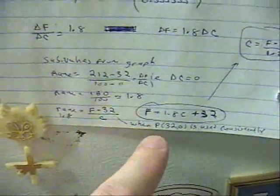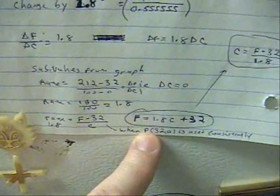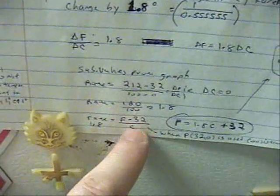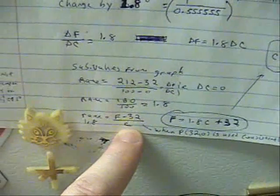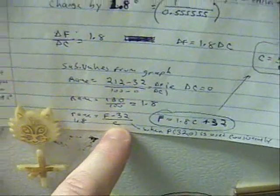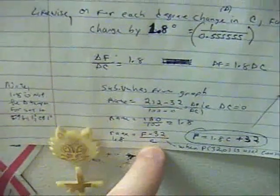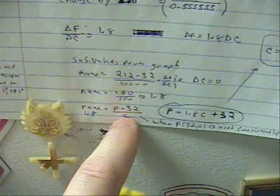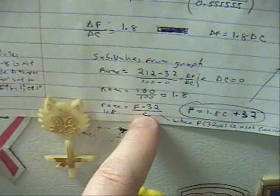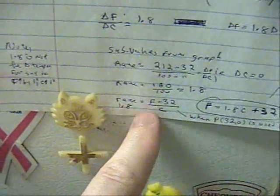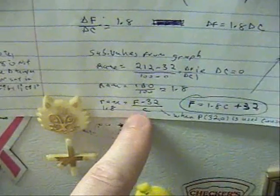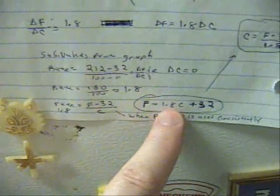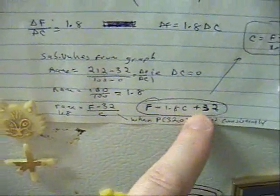When 0.32, 0 is used consistently, the change in Celsius will always be whatever you're trying to find out. So that reduces the format to just this, 1.8 equals Fahrenheit minus 32 divided by Celsius, and when you solve for Fahrenheit, you get Fahrenheit equals 1.8 times the Celsius plus 32.